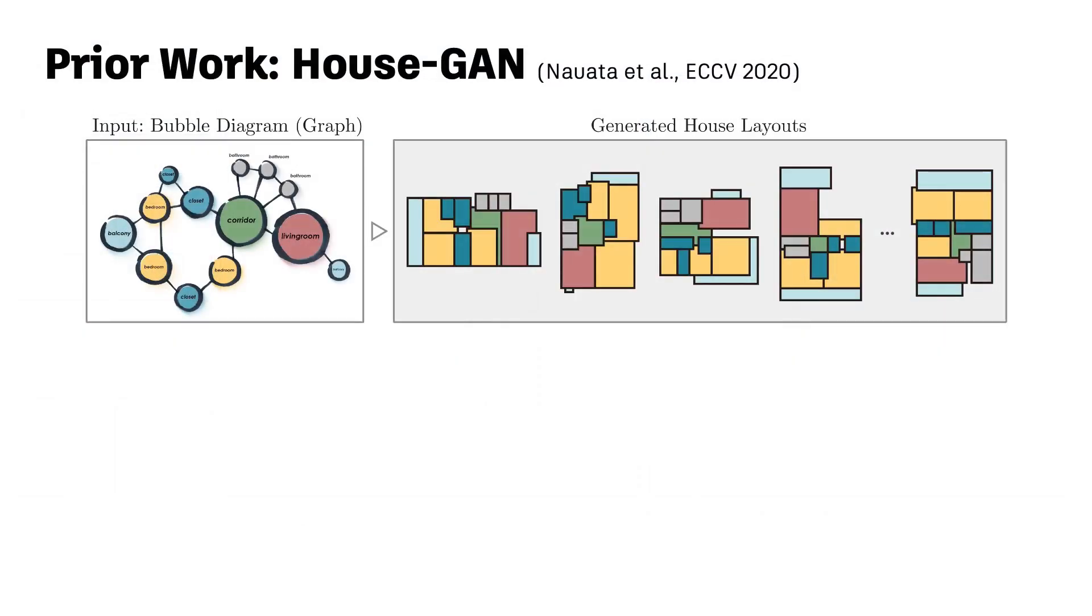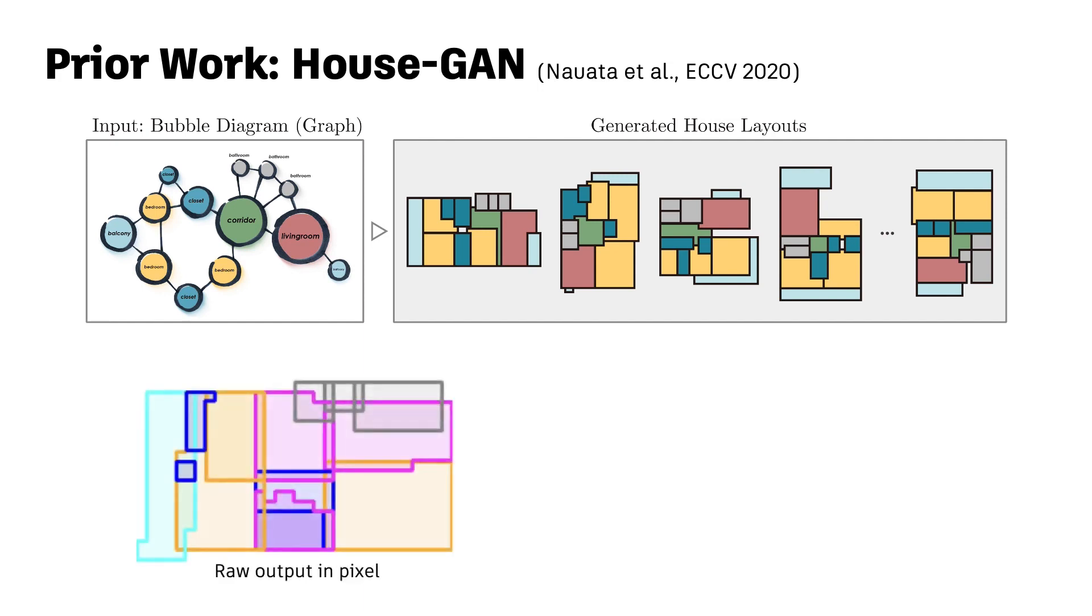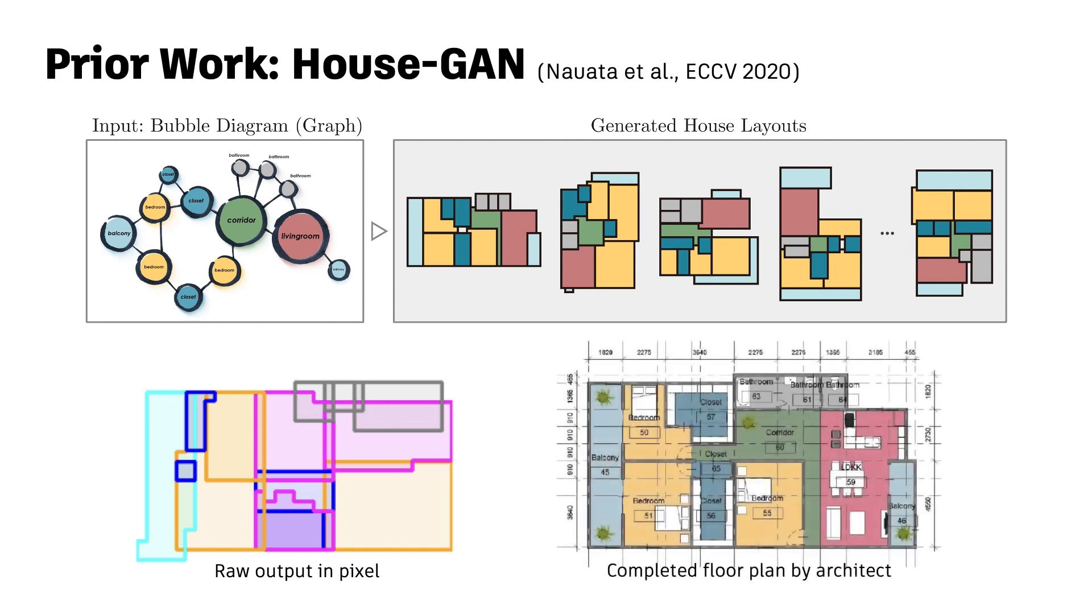The most relevant prior work is HouseGAN, which also takes a bubble diagram as input and generates 2D layouts. However, HouseGAN's raw output comprises image masks with many overlaps and has no clean edges and corners, whereas professional architects design floor plans that align with specific space partitions or modules.